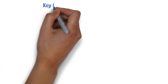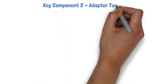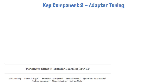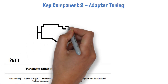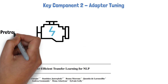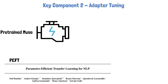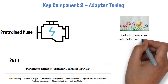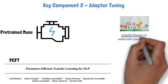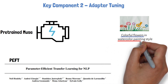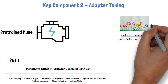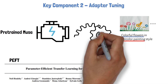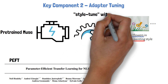The second key component in building StyleDrop is adapter tuning. This step is inspired by a paper about parameter-efficient fine-tuning, also known as PEFT. In this step, they take the large pre-trained Muse text-to-image transformer and a few style images, with text that separates content from style, like in this example — with the text 'Colorful flowers in watercolor painting style.' So the first part of the text is the content, and the second part is the style, and possibly there are a few more text and image pairs. They then style-tune the model efficiently on these images using adapter tuning.